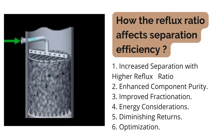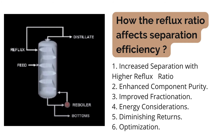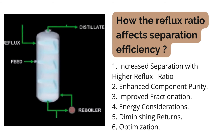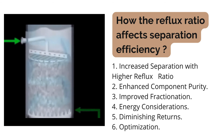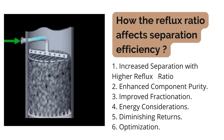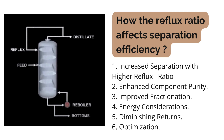The second point is enhanced component purity. A higher reflux ratio often results in higher purity of the distillation product, because the increased liquid in the column allows for more interaction between the vapor and liquid phases, leading to better separation of components with different boiling points. The third point is improved fractionation — the separation of components into different sections of the column is more pronounced with higher reflux ratios, as components with higher boiling points condense and flow back down while those with lower boiling points continue to rise.